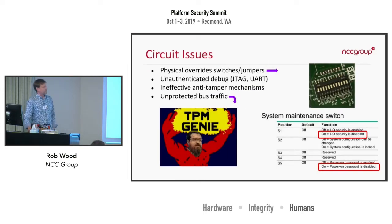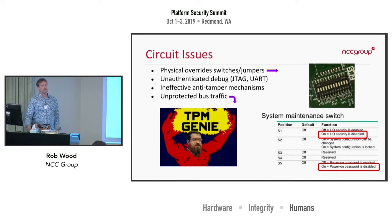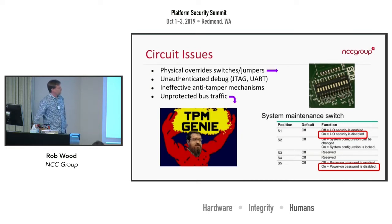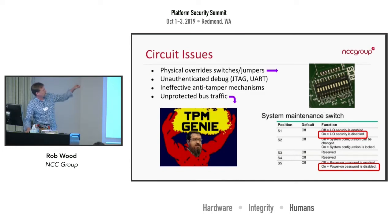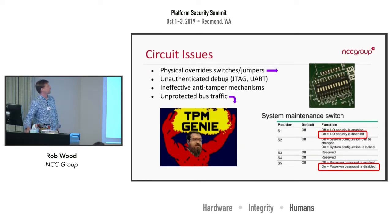Higher up still, at the circuit level, we have all sorts of neat physical overrides — dip switches, test points, jumpers. Most of these are designed for an administrator to recover a failing machine. This example is taken from the HP documentation: you can flip a couple of dip switches so anyone with small fingers can get in there and just disable the security of the BMC. So that's not great.